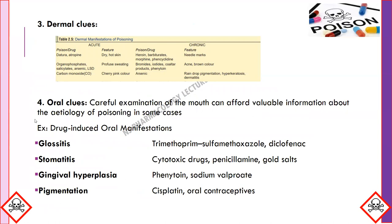Dermal clues: some poisons have characteristic dermal manifestations visible in acute toxicity, and certain cases also demonstrate skin signs on chronic exposure. In acute cases, atropine causes dry and hot skin. For chronic use, drugs such as heroin, barbiturates, and morphine produce needle marks on the body. Arsenic produces raindrop pigmentation, hyperkeratosis, and dermatitis.